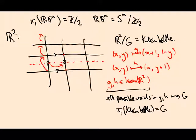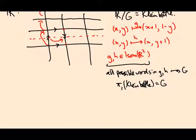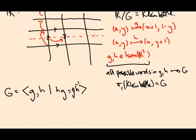So I claim that you can actually give a presentation for this group, generated by these two guys by definition, and these two guys satisfy a relation, which I think is HG equals GH inverse. And there has to be an inverse on one of these H's. Maybe this one. I think it's the other one.